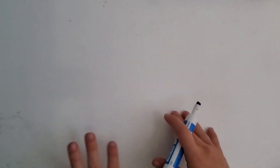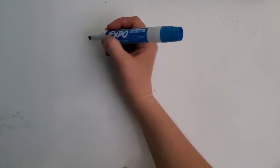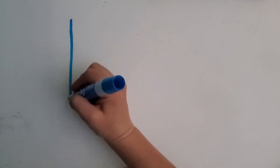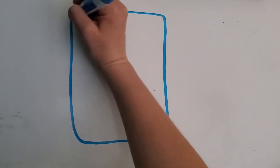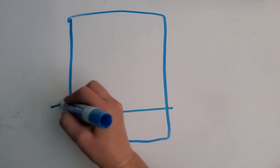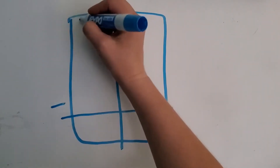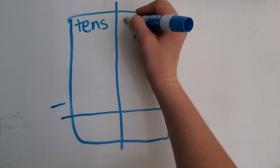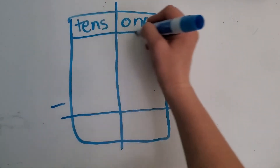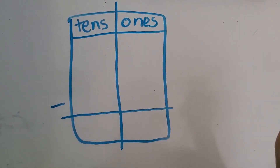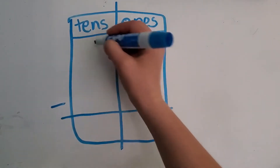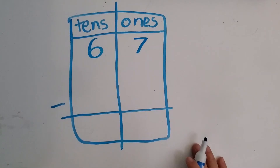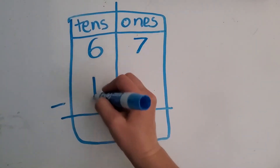All right, now let's review what we did yesterday. Let me get our tens and ones subtraction chart ready. Subtraction — put our line down the middle. We've got tens over here on the left side, ones on the right side. Let's do 67: six tens, seven ones, minus or take away 13.